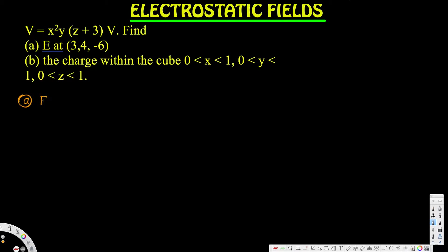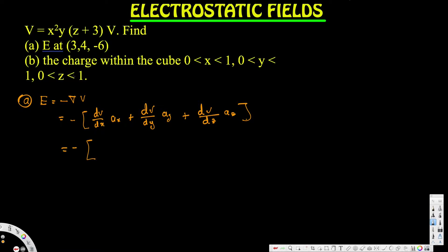For the first part, we need to find the electric field. Since we have the potential provided, E can be calculated using negative del V. Del is basically the partial derivative, so we take the partial derivative of the given V — which is x²y(z + 3) — with respect to x.